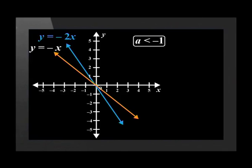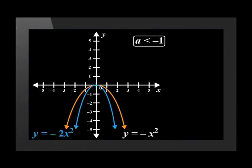Straight line and parabola graphs pull away from the x-axis for a values between negative 1 and 0 — in other words, where a values are greater than negative 1 and smaller than 0. But for a values less than negative 1, the reflected graph stretches vertically away from the x-axis. This effect can be seen by both the negative parent linear graph and the negative parent quadratic functions.